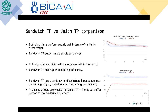The improved stability comes from the information that is lost in the Union Temporal Pooler when it activates its output. That lost information may help distinguish different sequences seen previously, because different details contained in those sequences are discarded in the UTP but propagated in the Sandwich Temporal Pooler. This allows it to better distinguish sequences from each other and produce more stable representations, since they don't interfere with each other.